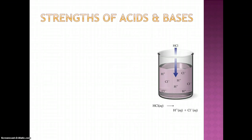According to Arrhenius, an acid is a substance that contains hydrogen and ionizes to produce hydrogen ions in solution. A base is a substance that contains a hydroxide group and produces hydroxide ions in solution.